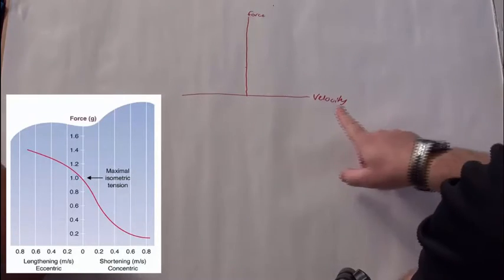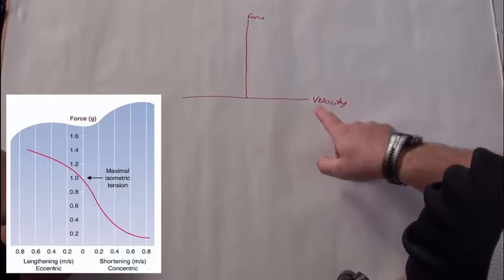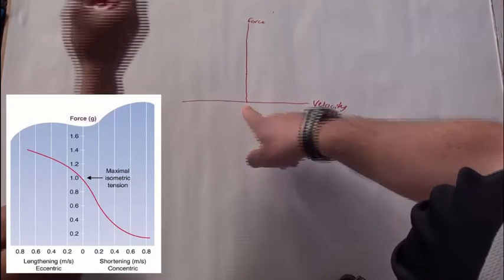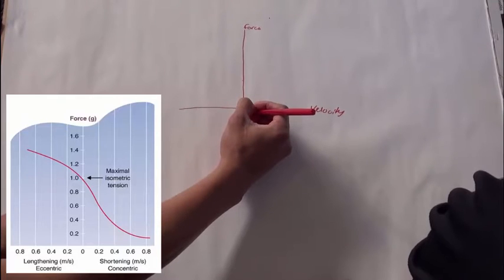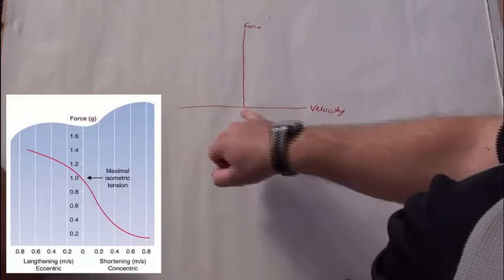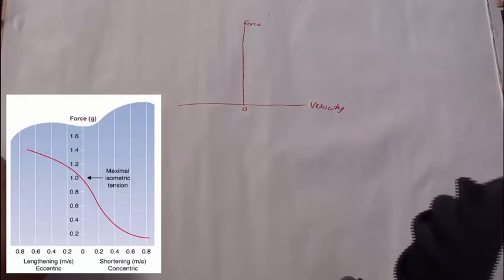Alright. So if this is velocity, what would this point on the velocity axis be? The isometric. Should be equal to zero? Yep. So if the velocity is zero, it's going to be an isometric contraction. Good.